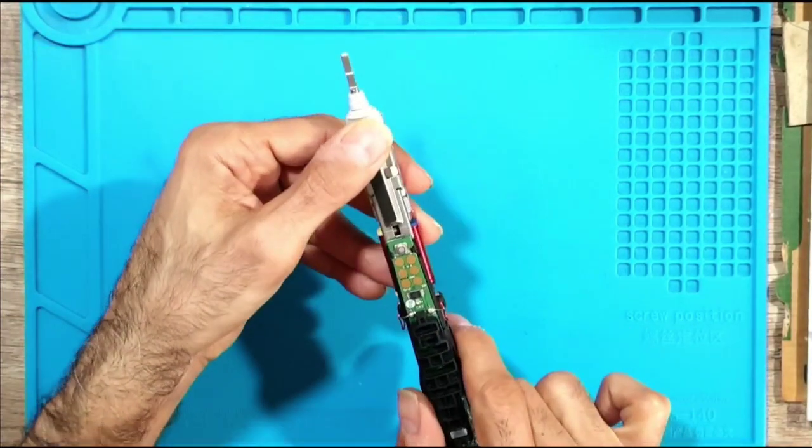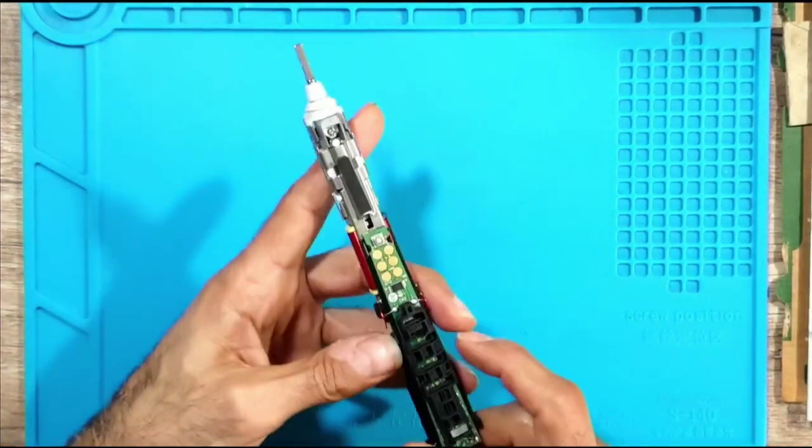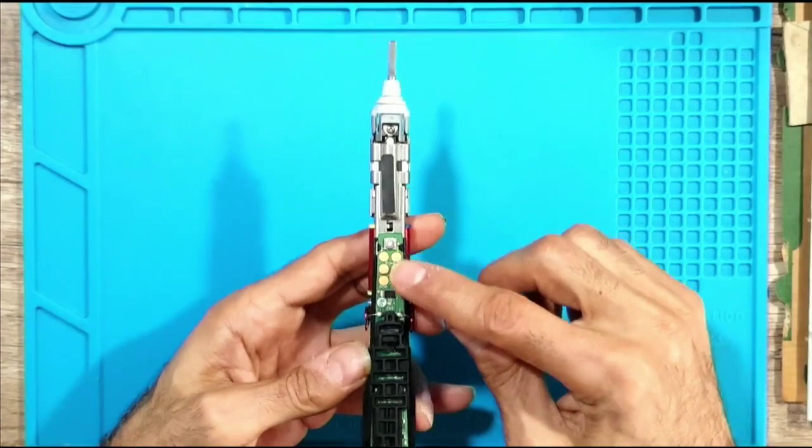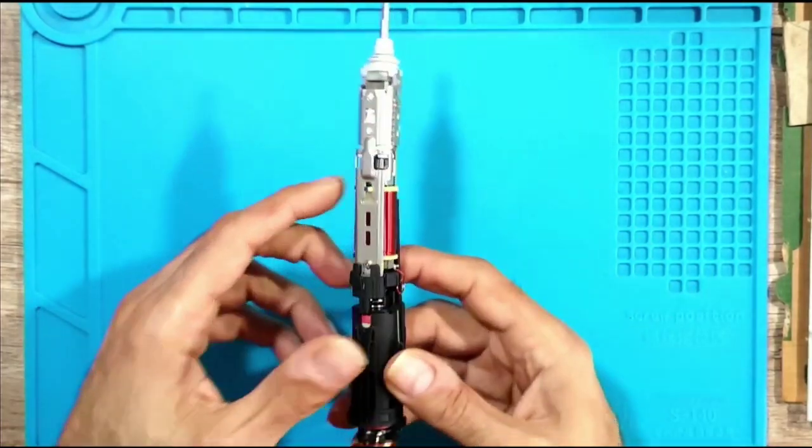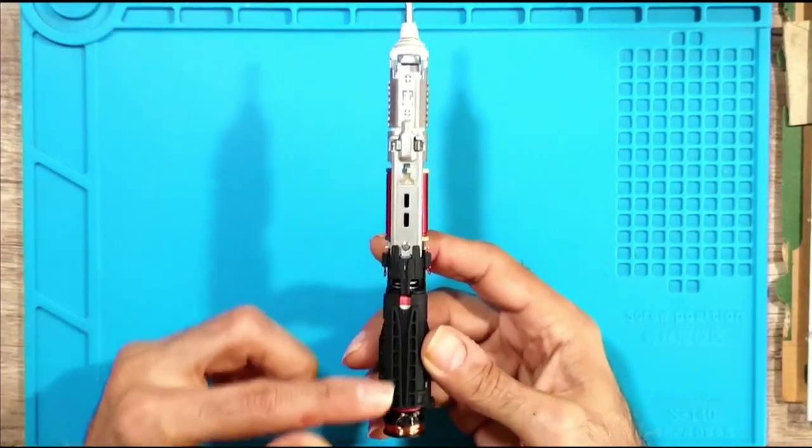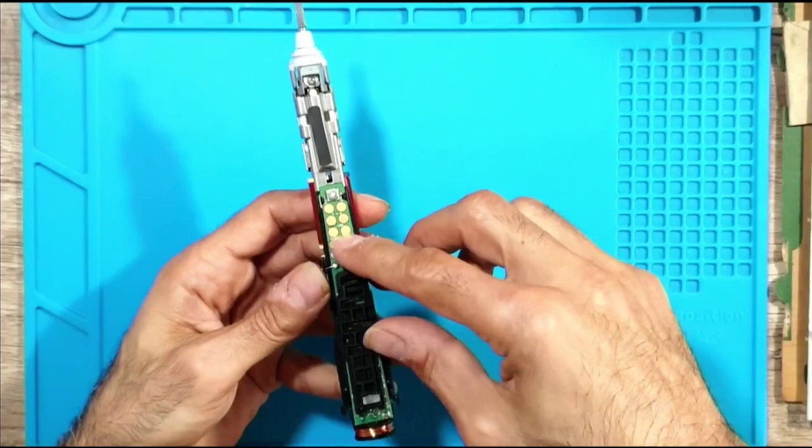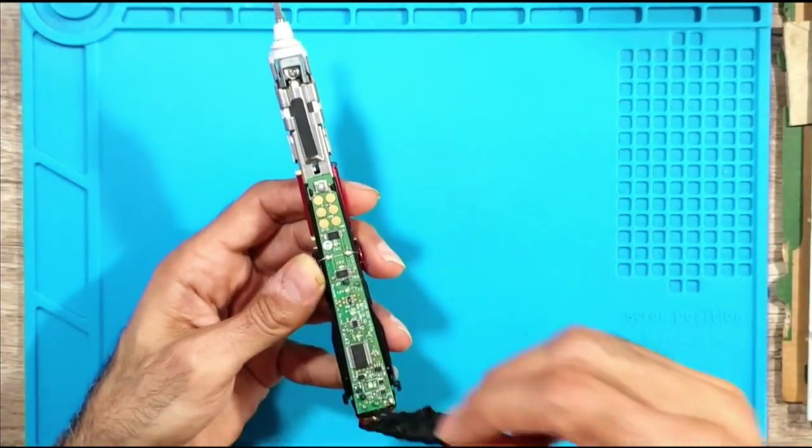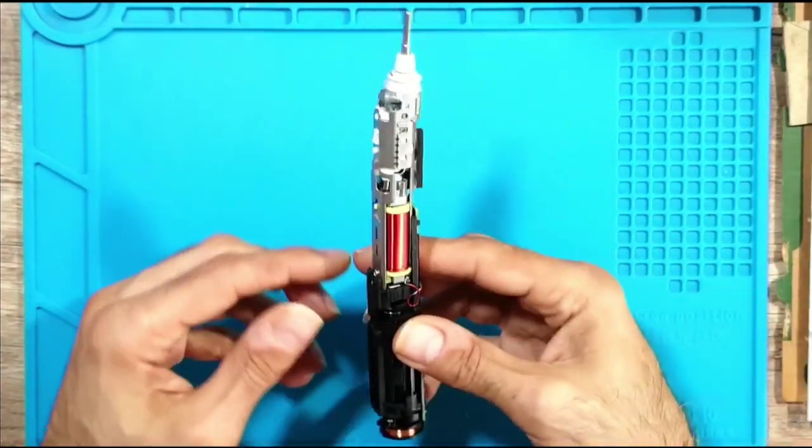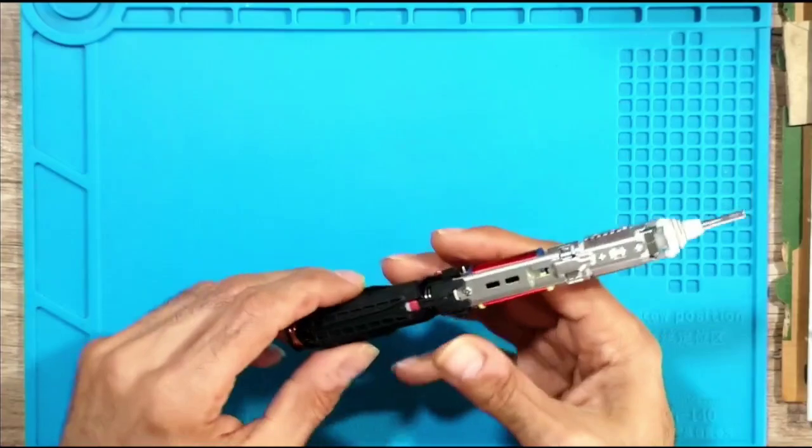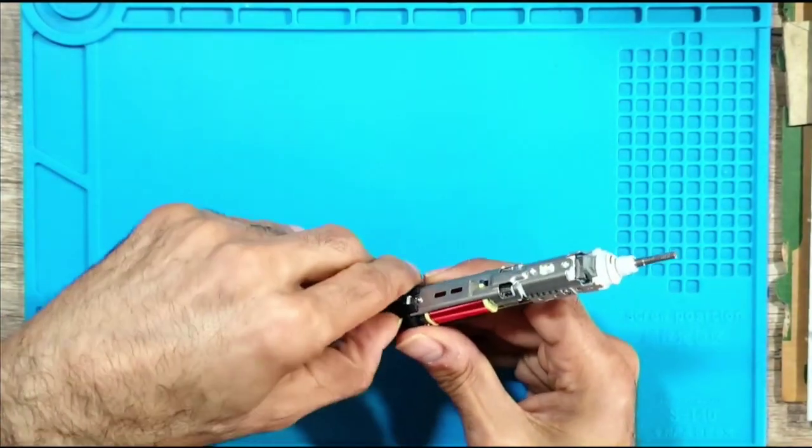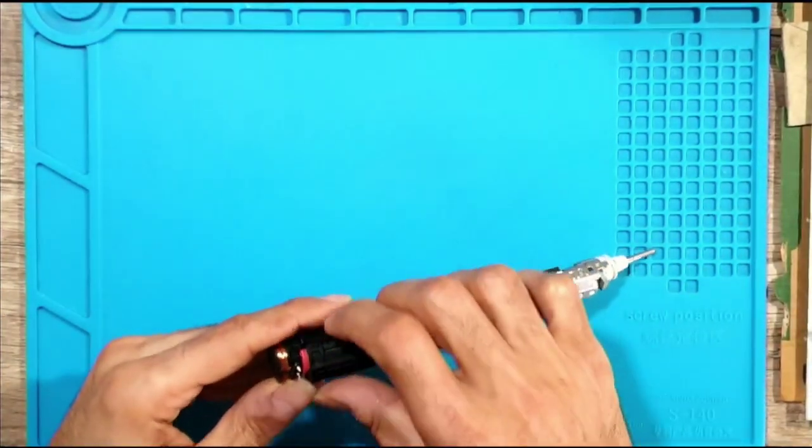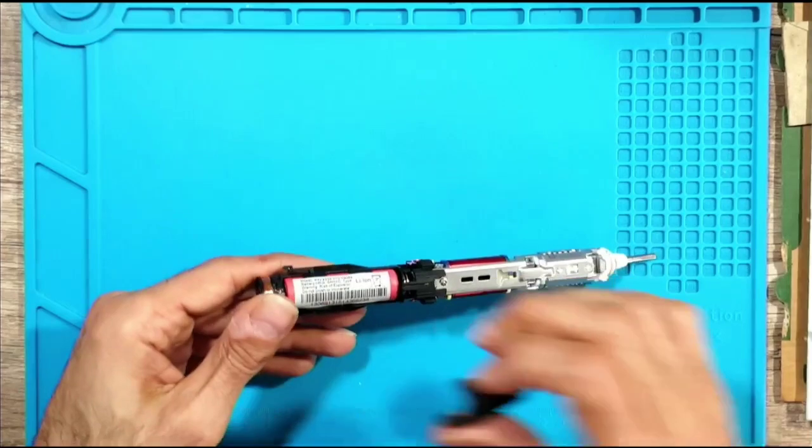So here we have the toothbrush. The board is here on this side and on the other side there's the battery. So we're going to remove these two rubber pieces, one on this side, one on the other side. There we go.